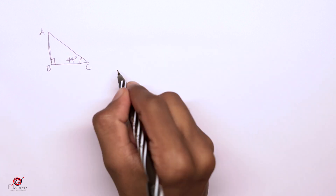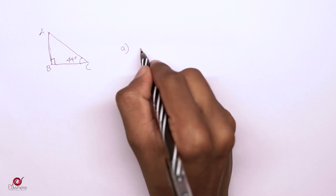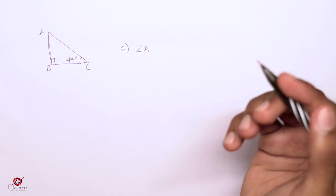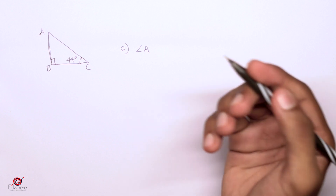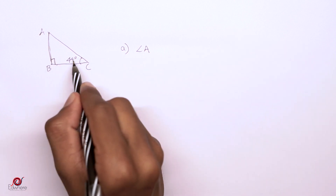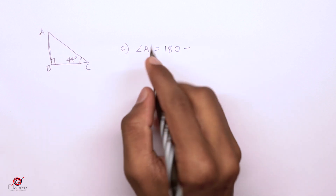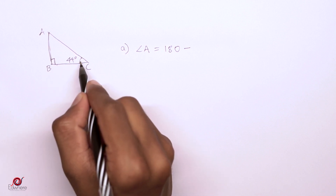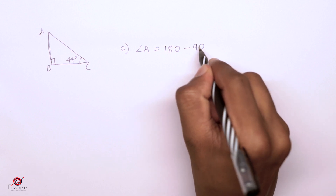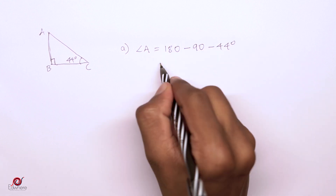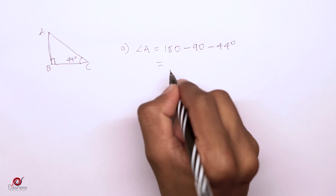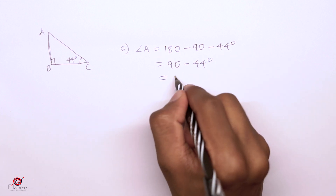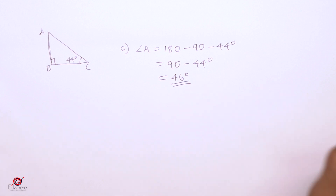Now let's find angle A. In a triangle, the sum of all angles is equal to 180 degrees. We know angle B is 90 degrees and angle C is 44 degrees. So angle A equals 180 minus 90 minus 44. That is 180 minus 90 equals 90, and 90 minus 44 equals 46 degrees. Therefore angle A is 46 degrees.